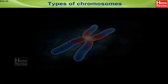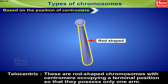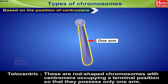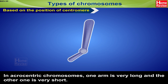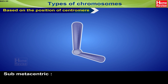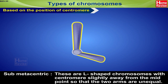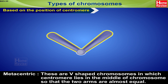Types of Chromosomes — based on the position of centromere: Telocentric chromosomes are rod-shaped with the centromere occupying a terminal position, so they possess only one arm. Acrocentric chromosomes are rod-shaped with a sub-terminal centromere; one arm is very long and the other is very short, giving them a J-shape. Submetacentric chromosomes are L-shaped, with the centromere slightly away from the midpoint so that the two arms are unequal. Metacentric chromosomes are V-shaped, with the centromere lying in the middle so that the two arms are almost equal.